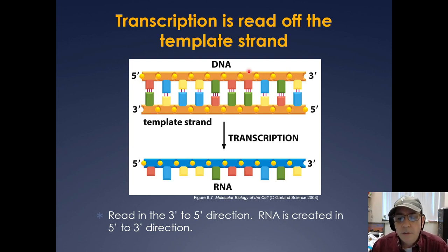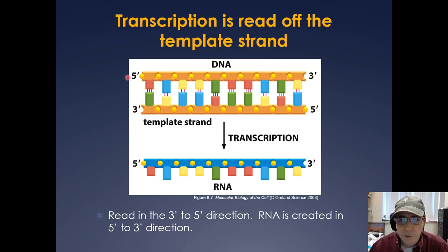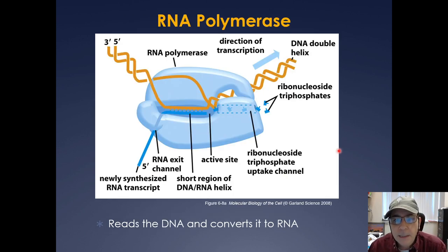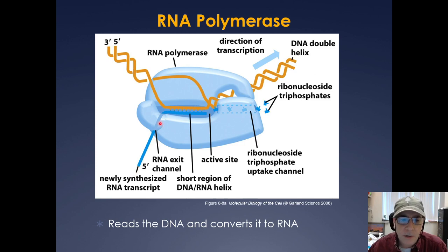Just like DNA replication, transcription is also read off a template strand. The template strand goes from three prime to five prime, and transcription proceeds from five prime to three prime. RNA is created in the five prime to three prime direction. The enzyme that converts DNA into RNA is called RNA polymerase. The direction it's moving is shown here; the mRNA exits through an RNA channel. Here's the active site where complementary base pairing with the DNA occurs as bases are being added.